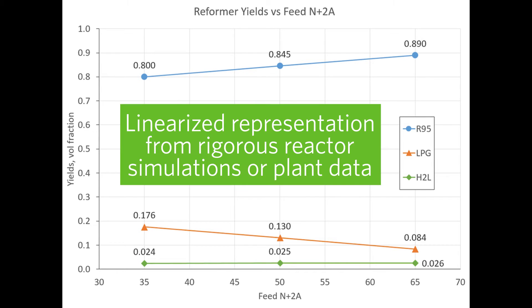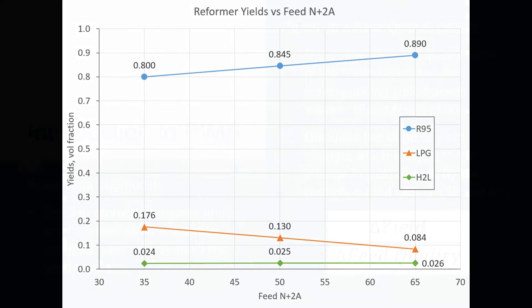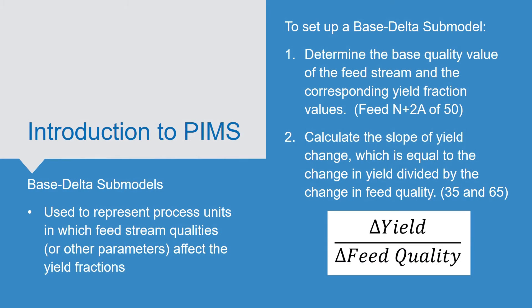An important note is that this is a linearized representation based on either rigorous reactor simulation models or measured plant data. Either data source is then linearized. To set up a base delta submodel, we first must collect the following information. We need to determine the base quality value of the feed stream and the corresponding yield fraction values. In our example, this will be at a feed value of 50.